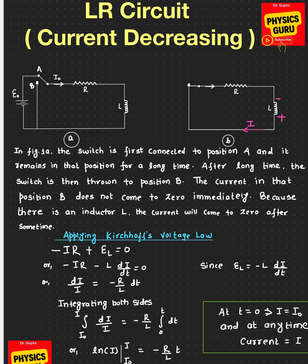The opposition gets weaker and weaker, and eventually the current will come to zero — but it doesn't come to zero right away. It takes a certain amount of time. How long does it take to come to zero? That depends upon the L value and the R value. So now let's find out the direction of the induced current.